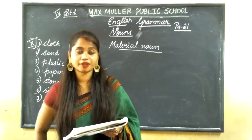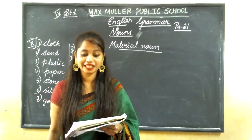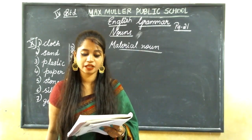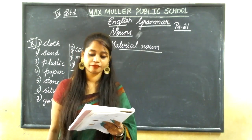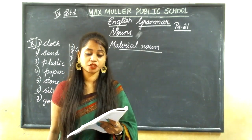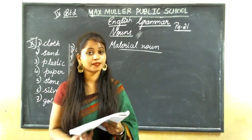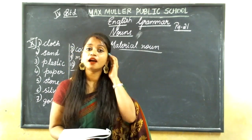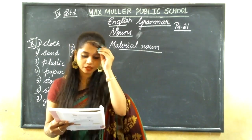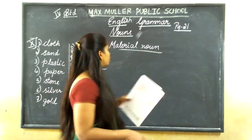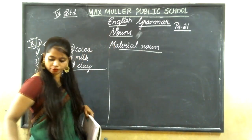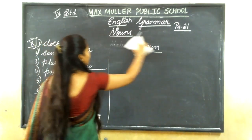Abstract nouns can be the name of a quality — like kindness, honesty, courage; a state — like death or life; a stage — like childhood; an idea — like beauty; and feelings — like happiness and sadness. These all come under abstract nouns. Now match the word with a suitable abstract noun.